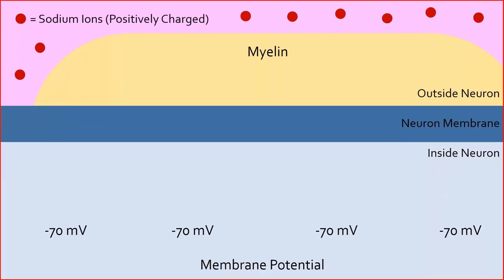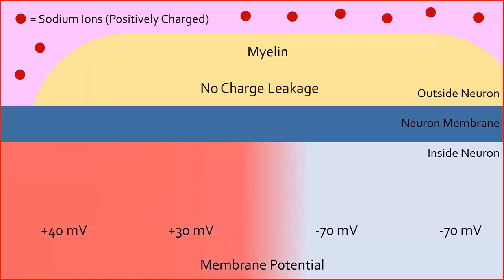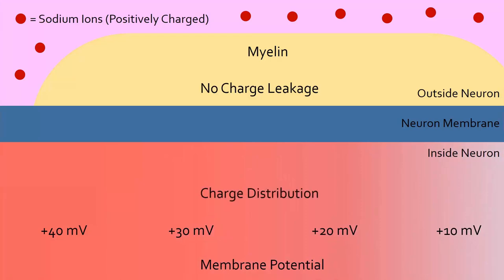Thankfully, we have evolved amazing adaptations to solve the problem with decreasing charge and signal. By wrapping myelin around the axon, charge leakage is reduced because myelin acts as an insulator, like wrapping duct tape around a leak. Since less charge is lost, more charge is available to spread out. Therefore, this increases the distance that the positive charge can spread to.